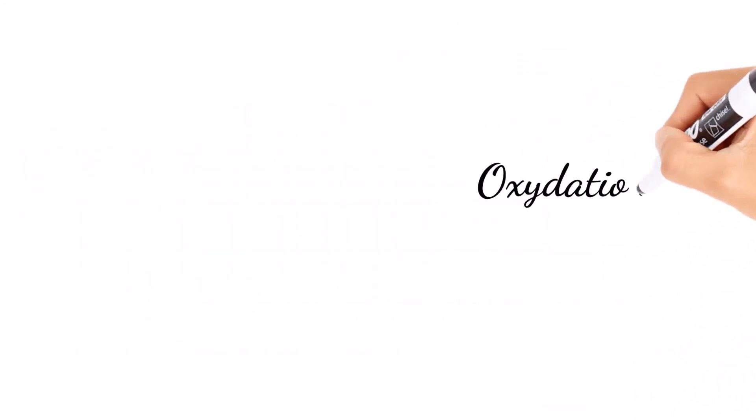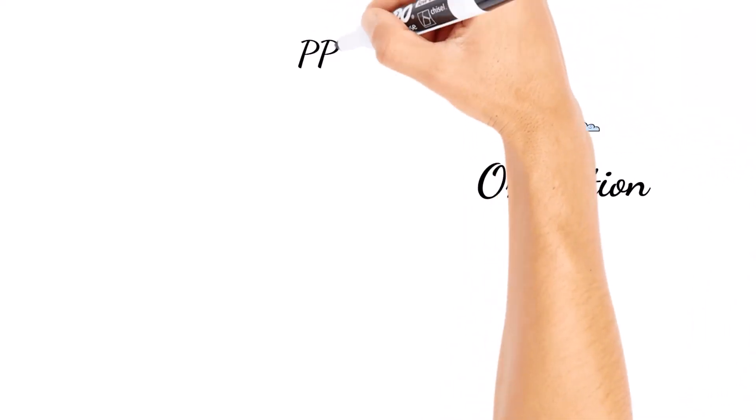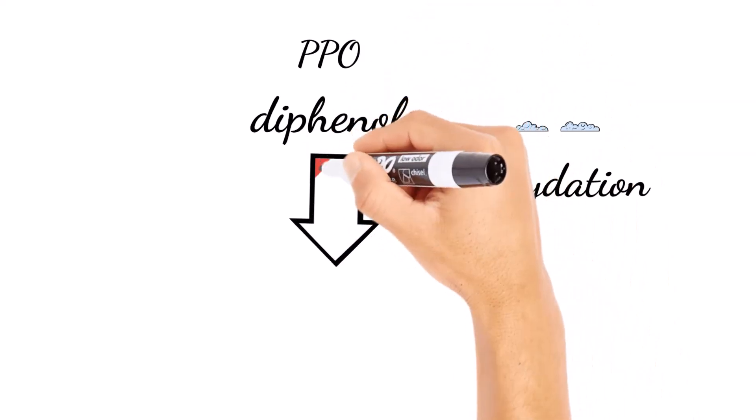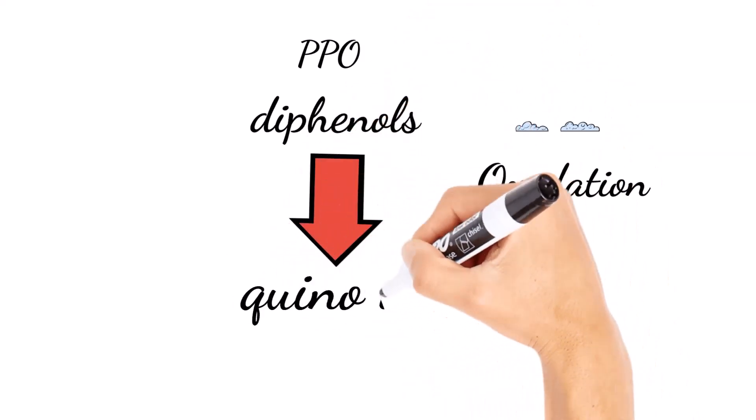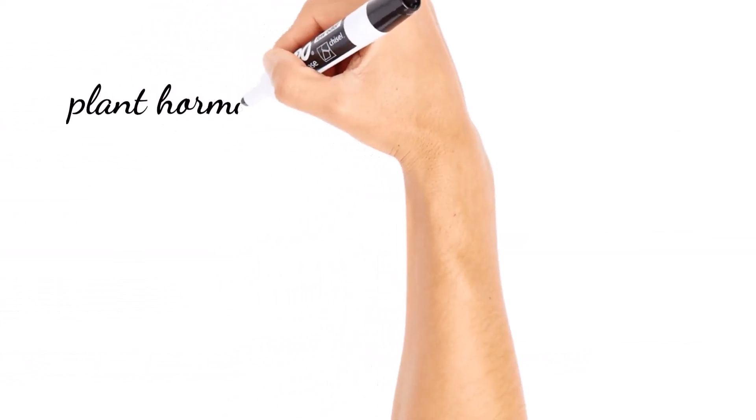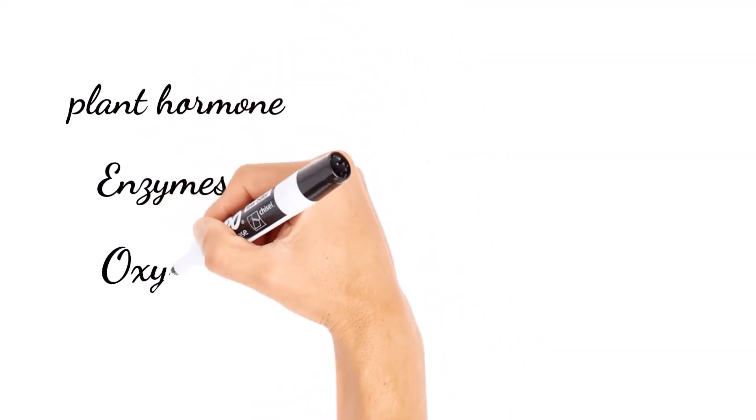In the presence of oxygen from the air, oxidation occurs with help from PPO and the diphenols are converted to quinones. The quinones are the reason the brown pigment occurs. The flesh of an avocado oxidizes pretty quickly. So, to conclude this, you need the ethylene plant hormone activating the enzymes in the presence of oxygen to make your guacamole this disgusting.